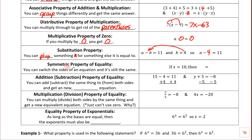The symmetric property of equality — this is one we've demonstrated before, and now it has a name. What this means is you can switch the sides of an equation and it's still the same thing. If you see x equals 10, somebody else could write 10 equals x — same thing. It's like doing a pancake flip and flipping the sides. That's called the symmetric property.